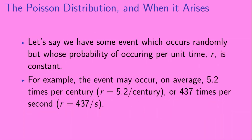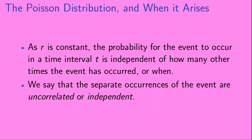Let's say we have some event which occurs randomly, but whose probability of occurring per unit time, r, is constant. For example, the event may occur on average 5.2 times per century, so r would be 5.2 per century, or 437 times per second, so r would be 437 per second. As r is a constant, the probability for the event to occur in a time interval t is independent of how many other times the event has occurred, or when. We say that the separate occurrences of the event are uncorrelated, or independent.